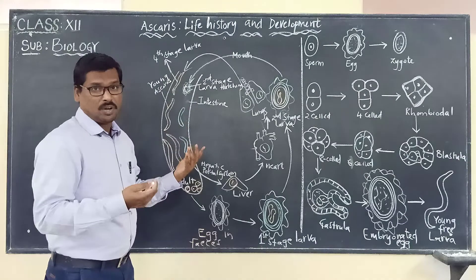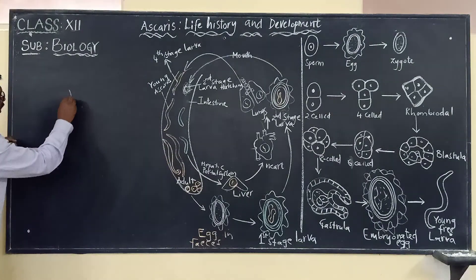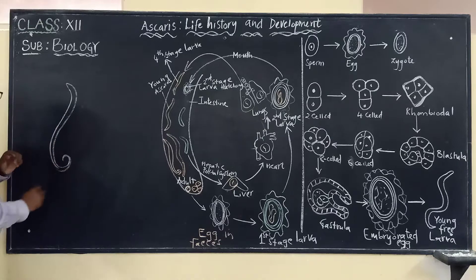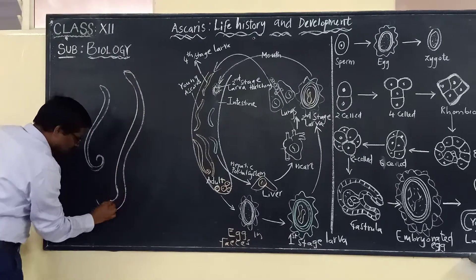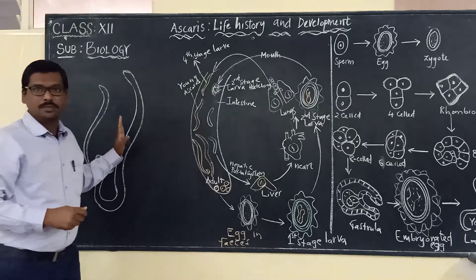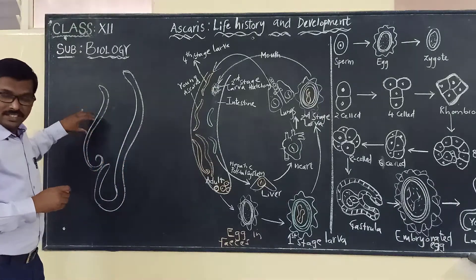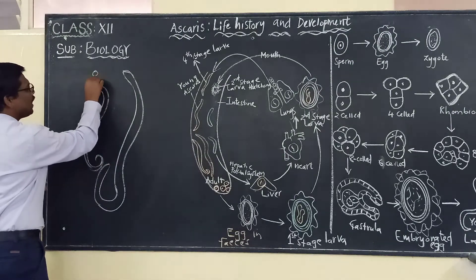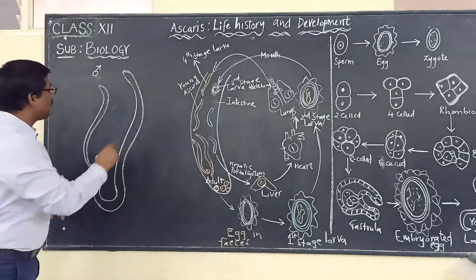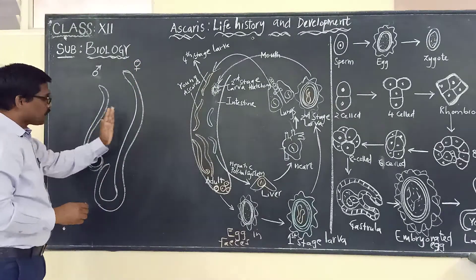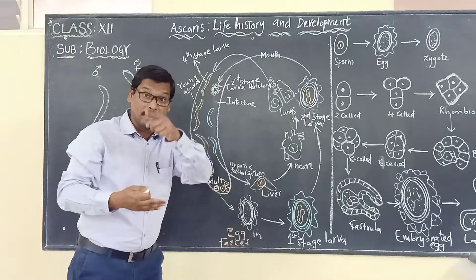It is dimorphic — sexes are separate, found on two different individuals. Here are two worms: Ascaris lumbricoides. The smaller one is the male roundworm, and the longer one is the female. These two worms are present in the small intestine. Let us now discuss how these are multiplying and completing the life cycle.